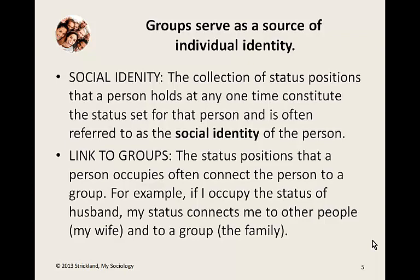How is it that groups serve as a source of individual identity? We've already learned that each person holds a number of status positions, and that each status position has one or more roles attached to it. Roles are the expectations connected to a status, and a status is simply a position that a person holds, such as male or female, butcher, baker, candlestick maker, and so on. All the status positions a person has at any one time we call their social identity, or their status set.